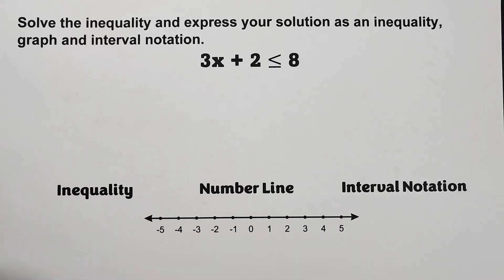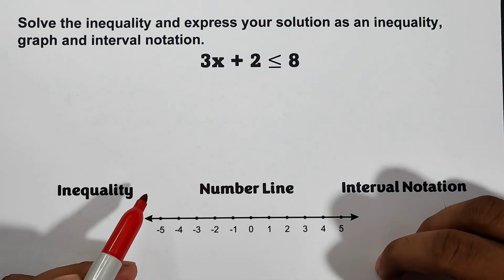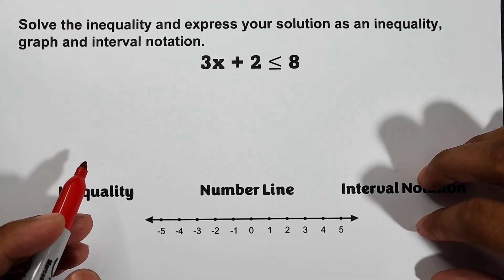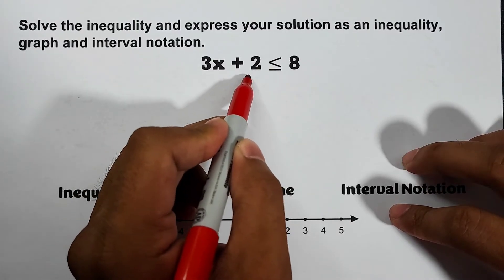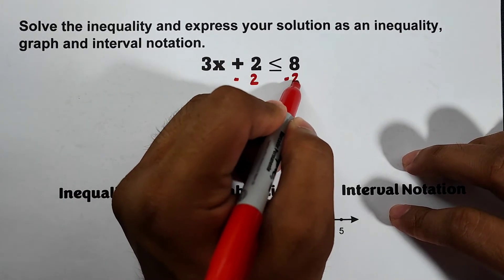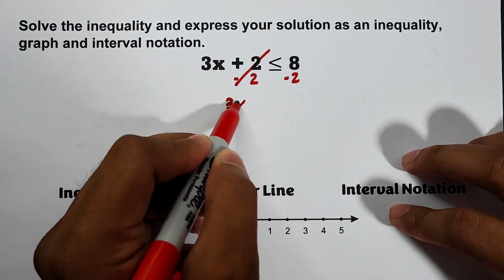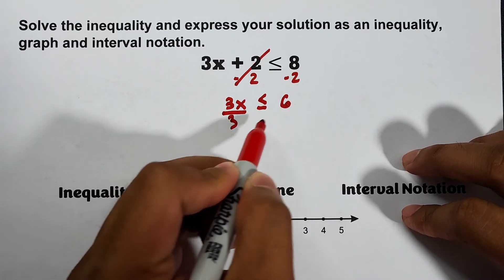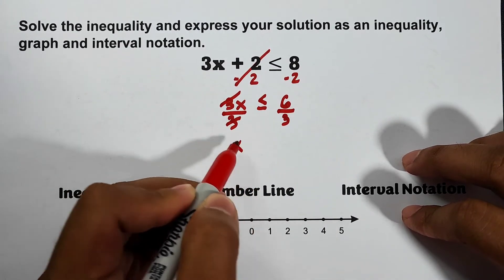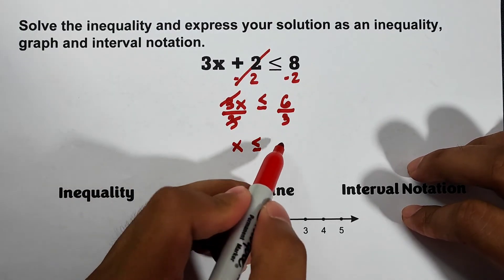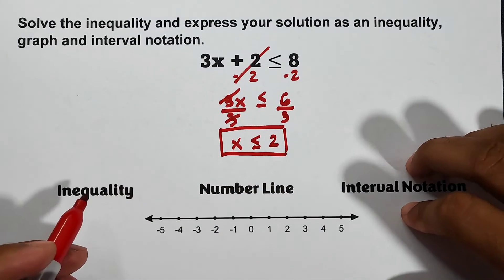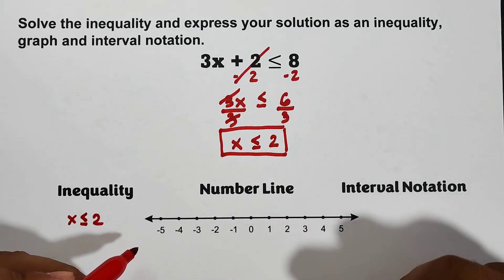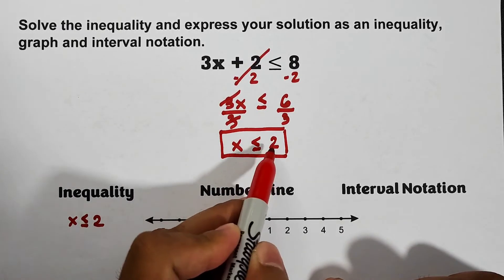For number 2 we have 3x plus 2 is less than or equal to negative 2. First we eliminate the constant plus 2 by subtracting both sides by 2. That gives us 3x less than or equal to negative 4. Then we divide both sides by 3, which cancels, giving us x is less than or equal to 6 divided by 3, which equals 2. So the inequality is x is less than or equal to 2. For the number line, we start at the critical value 2.